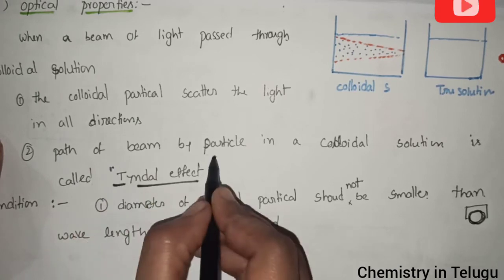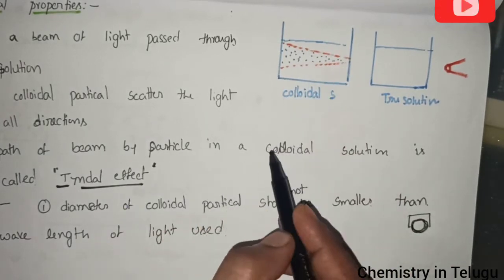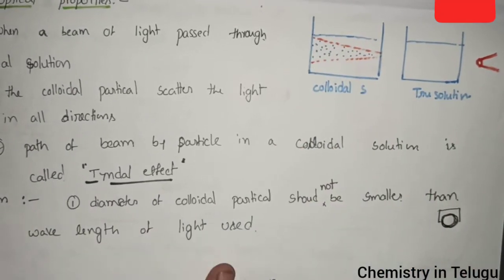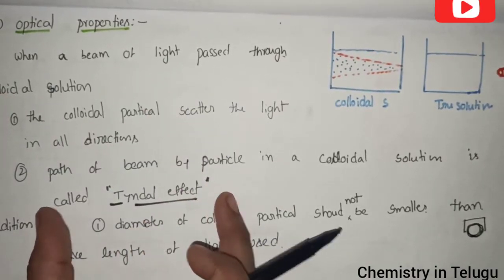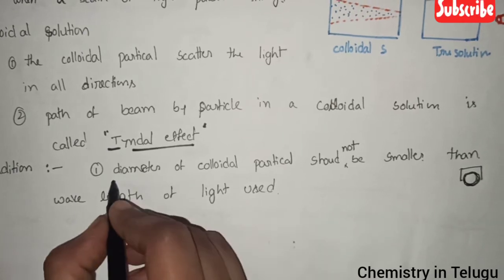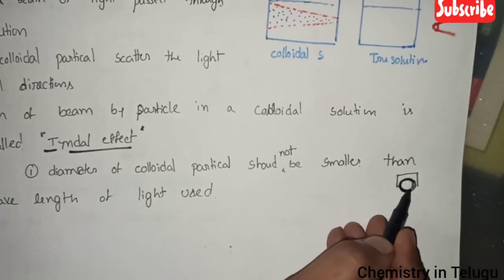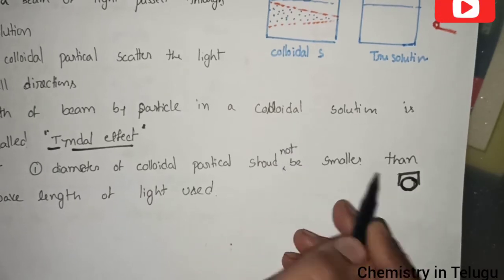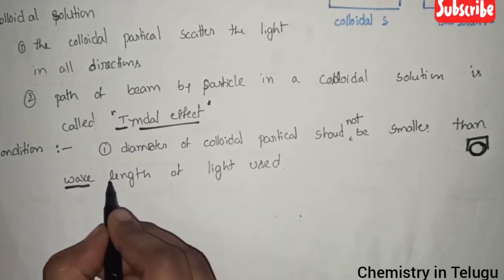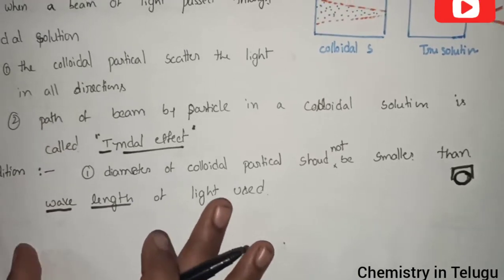The Tyndall effect — the path of the beam scatters — is an important two-mark question. This is the Tyndall effect, which is an optical property. The main condition is that the diameter of the colloid particles should not be smaller than the wavelength of light. This particle size condition must be met for scattering to occur.